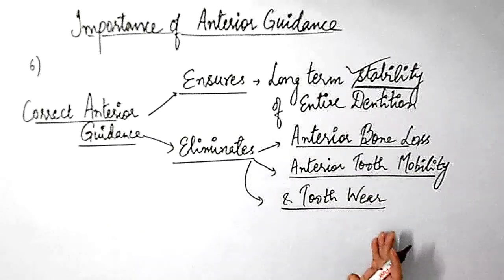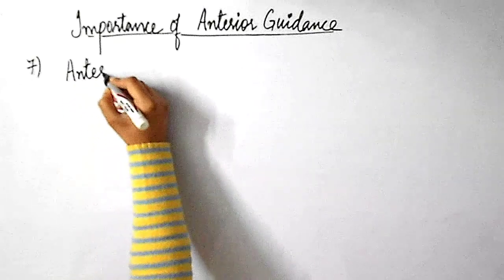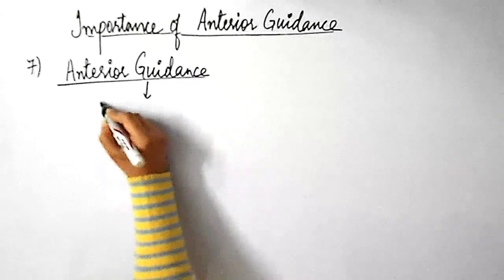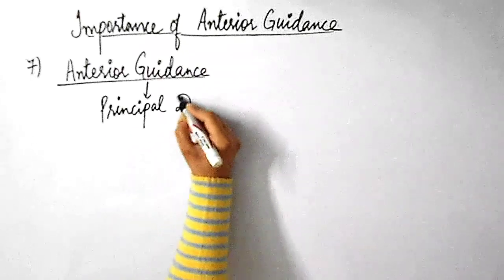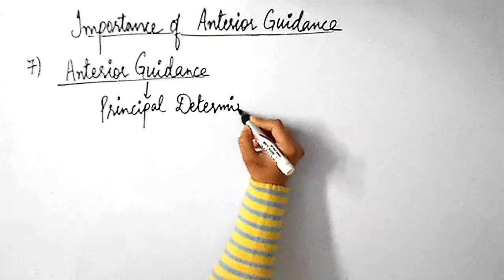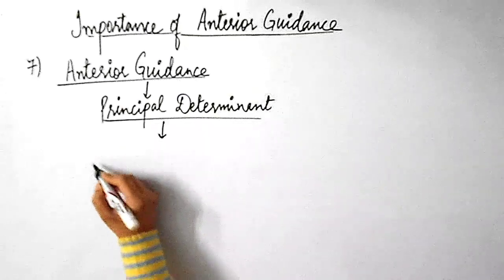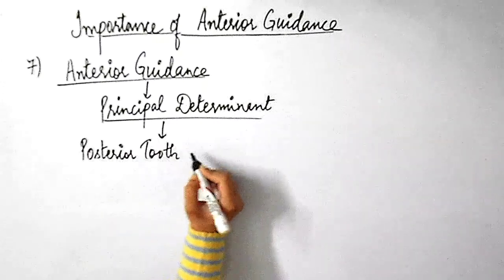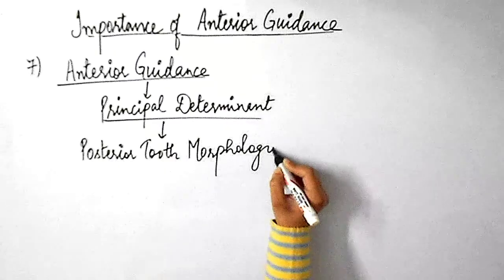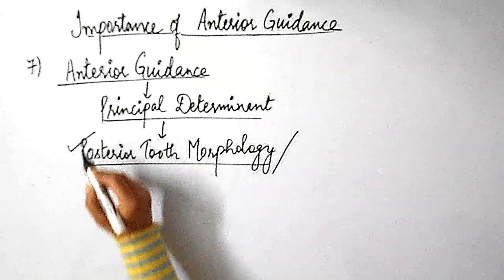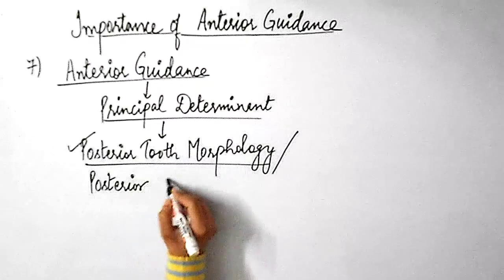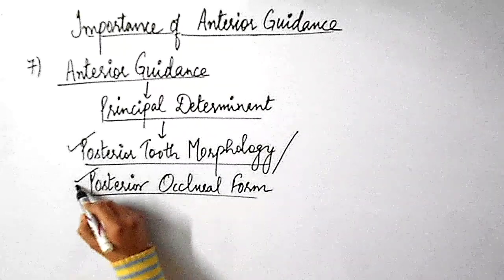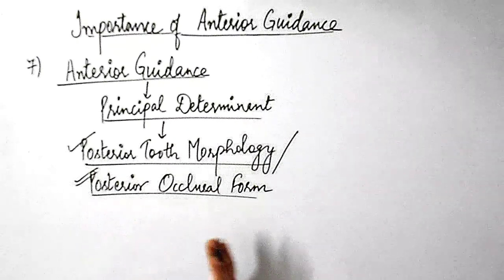Anterior guidance is also the principal determinant of posterior tooth morphology and the posterior occlusion form. If you want to know the role of anterior guidance in determining the cuspal form of posterior teeth, check out the linked video which explains why anterior guidance should be taken into consideration while selecting posterior teeth for removable partial dentures or fixed partial dentures.